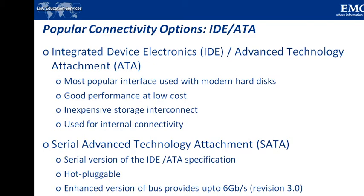In a master-slave configuration, an ATA interface supports two storage devices per connector. However, sharing a port between two devices is not recommended. Next, the serial version of this protocol supports single-bit serial transmission and is known as Serial ATA (SATA). High performance and low cost mean SATA has largely replaced PATA in newer systems. SATA revision 3.0 provides a data transfer rate up to 6 GB per second, compared to the 133 MB per second of parallel ATA — a significant difference in throughput.